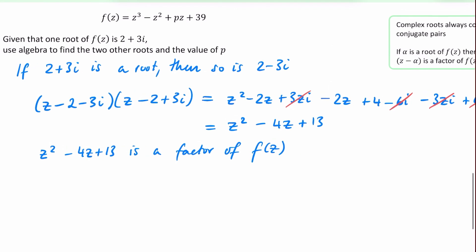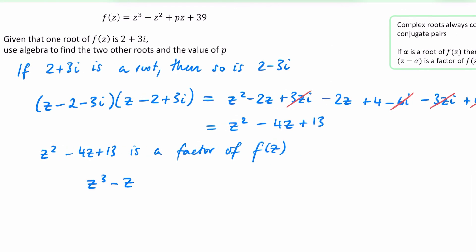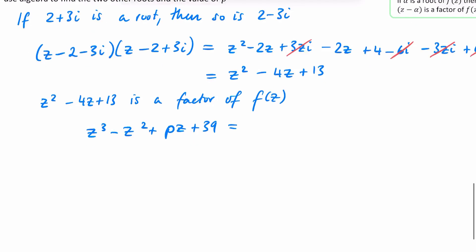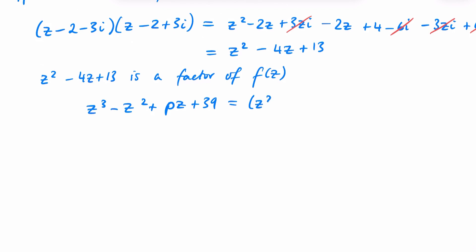So now I know that z squared minus 4z plus 13 is a factor of f of z. So f of z that we have here is z cubed minus z squared plus pz plus 39, and I know that this can be rewritten with this thing as a factor. So I'm going to put it like this, and I know if it's going to be a cubic, there's got to be a z to get the z cubed part at the beginning, and we just need to figure out what this number is going to be. Well, there's only one option, because of the fact this is a 39 and this is a 13, that must be a positive 3 that we have here. So I can now say, hence, minus 3 is the third root.